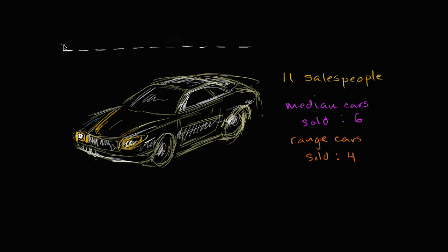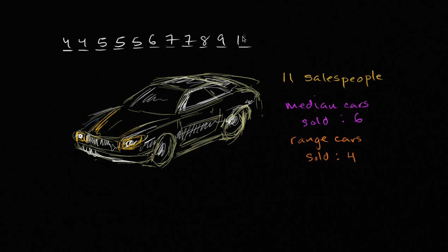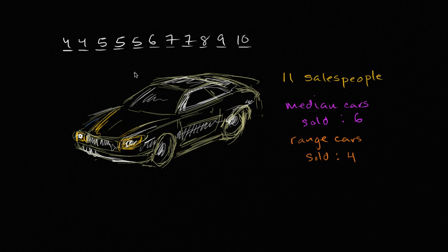I'm just making up numbers here — maybe this is four, four, five, five, five, six, seven, seven, eight, nine, 10. The median cars sold means the middle number here is going to be six. Now we don't know whether all of these other numbers are the actual numbers, I just made those up, but we know that the middle number needs to be six.